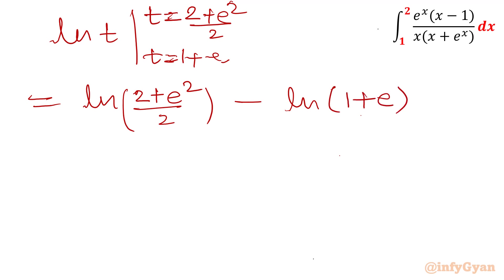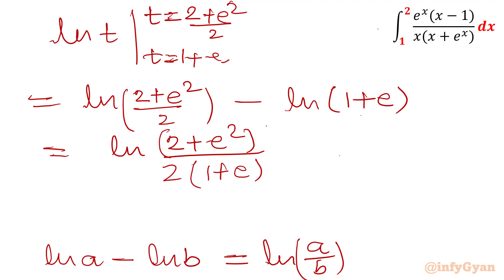Now we know that ln a minus ln b, that property of log is ln a over b. So I will write ln 2 plus e square over 2 and 1 plus e. In other words, it was actually in that paper to match with this: ln 2 plus e square divided by 2 plus 2e. This was exact rule. So this is how we will find out.